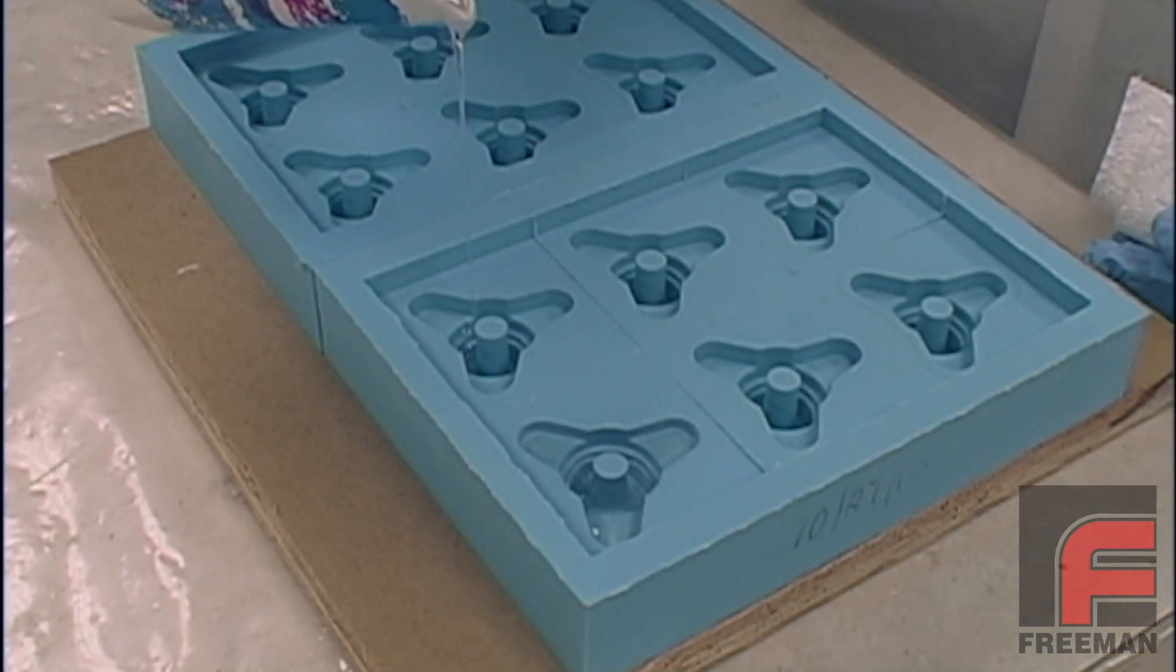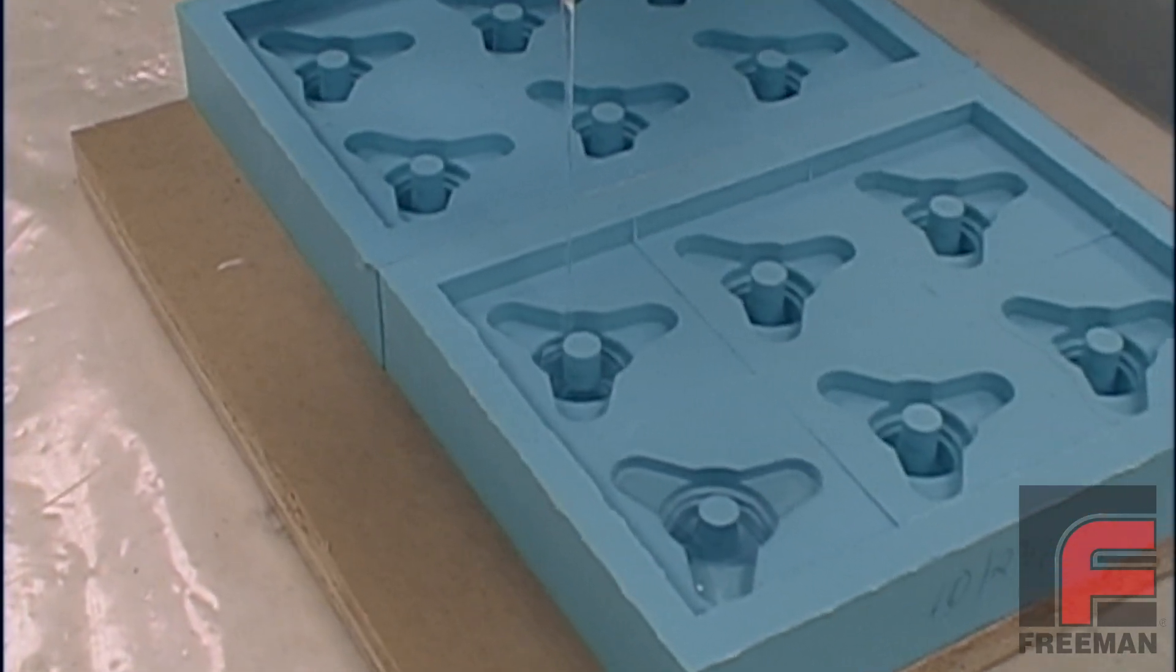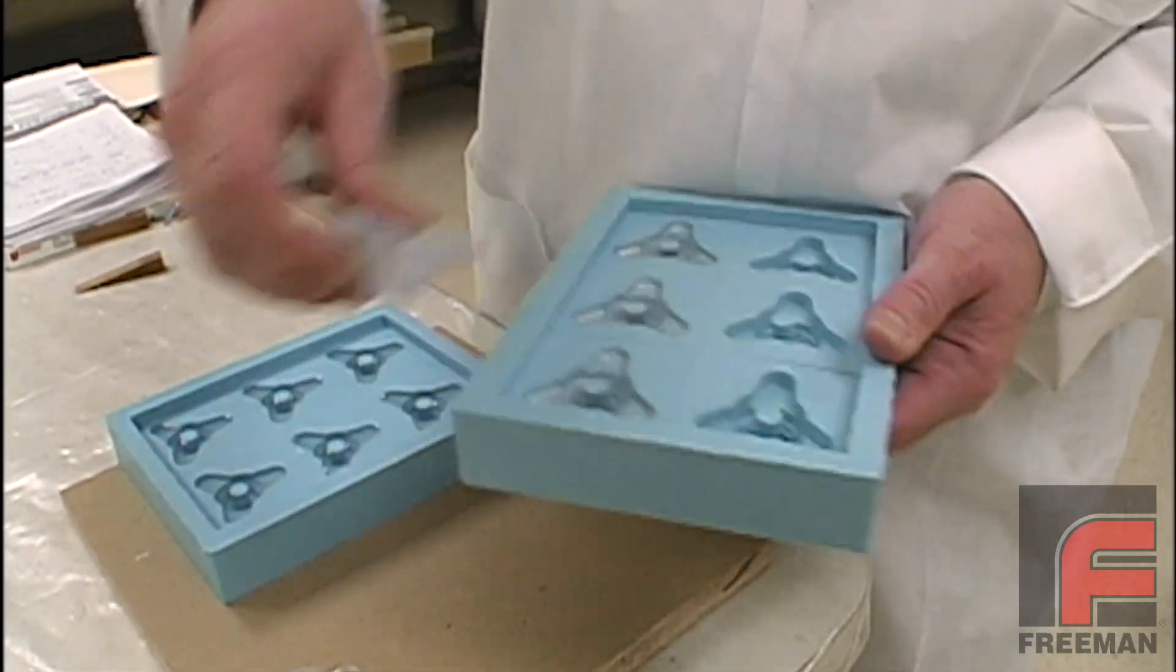Here, you see two six-cavity molds being filled with our Freeman 1090 Clear Polyurethane. The next morning, we have 12 perfect clear castings, and the mold is ready to go to work again.